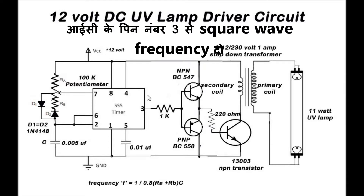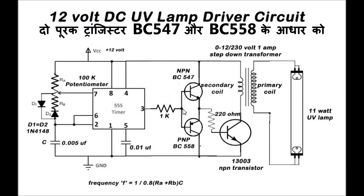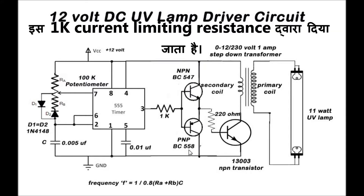The square wave output frequency from pin number 3 of the IC is fed to the base of two complementary transistors — BC147 and BC158 — through this 1K current limiting resistor.